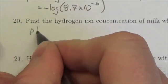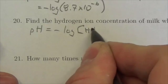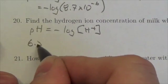Our formula is pH equals the negative log of the hydrogen ion concentration. In this case we know that the pH is 6.5.